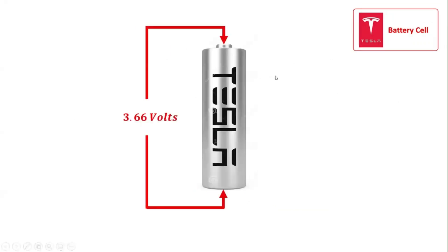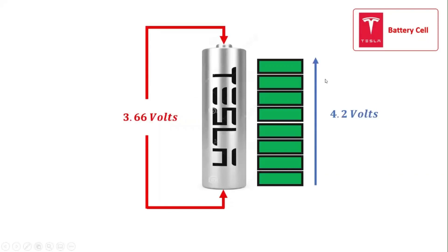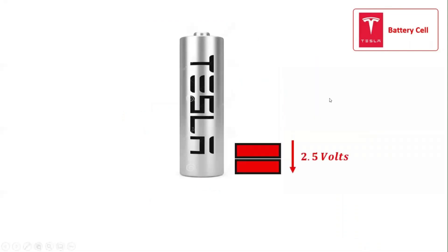At a nominal voltage of 3.66 volts, each 18650 cell can be charged as high as 4.2 volts, with each cell storing up to 3,400 mAh. Each 18650 cell can be discharged as low as 2.5 volts.